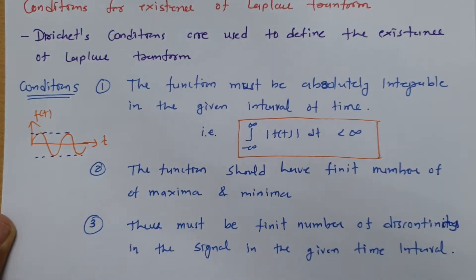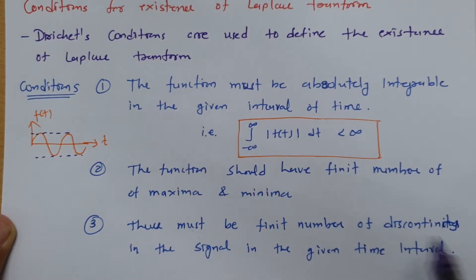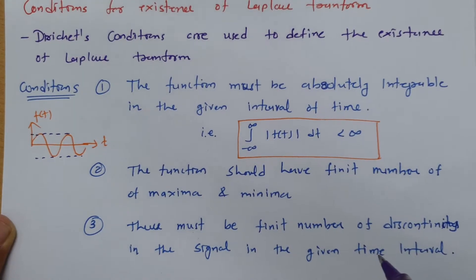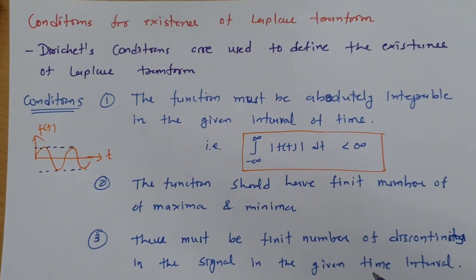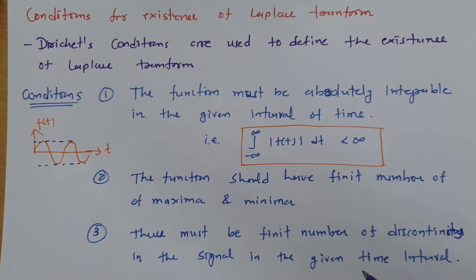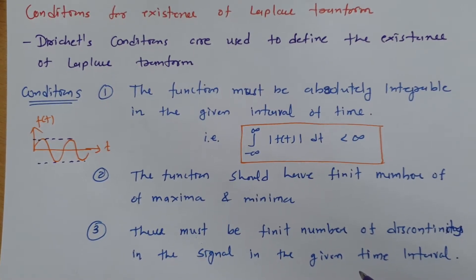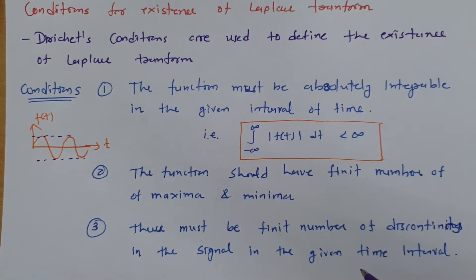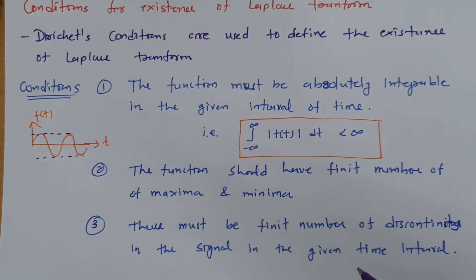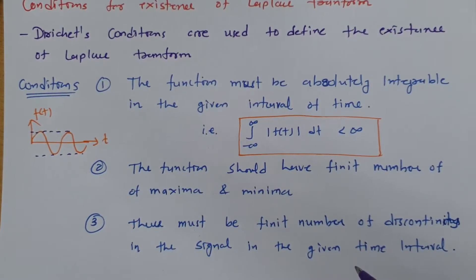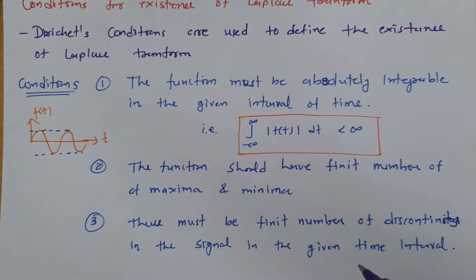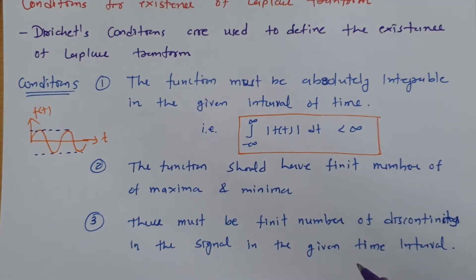The third condition is that there must be a finite number of discontinuities in the given signal for the given time interval. Whenever discontinuity occurs, it should be finite — there cannot be an undefined number of discontinuities. If there is an undefined number of discontinuities, one cannot calculate the Laplace transform of the given signal.